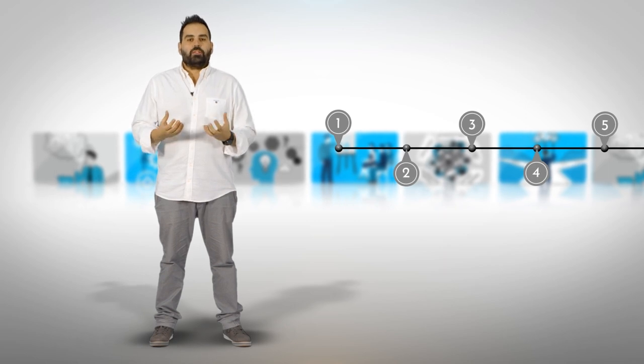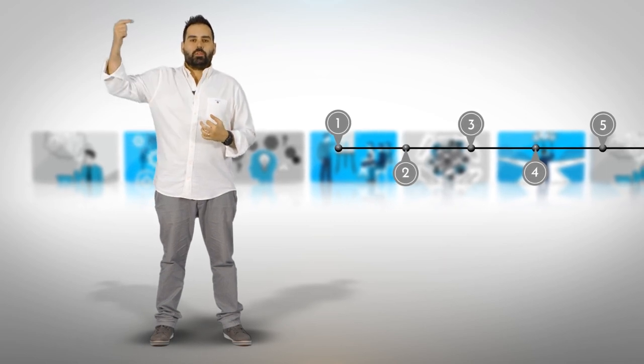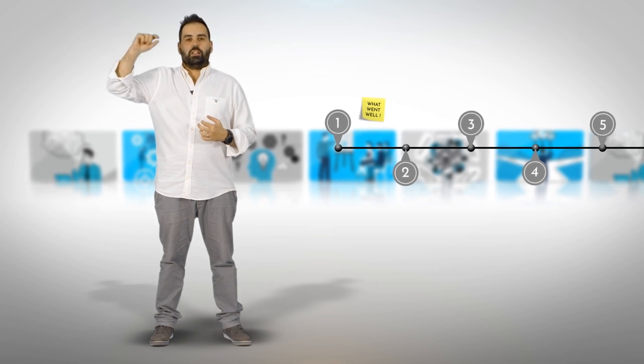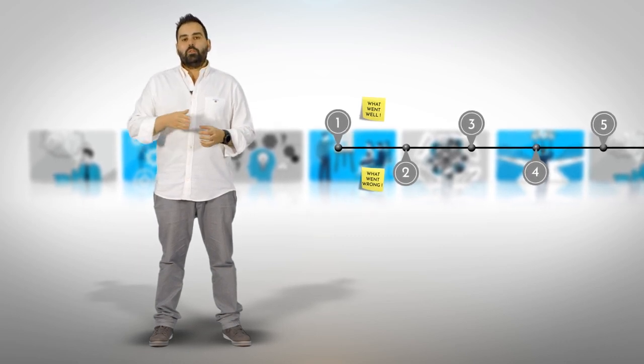Ask what were the challenges and what were the achievements. If the team was very happy, they put a post-it on the top — that's the positive energy — and explain what went well. If the team felt very bad, they put a post-it on the bottom and explain what went so wrong.